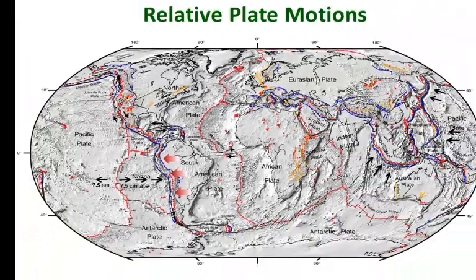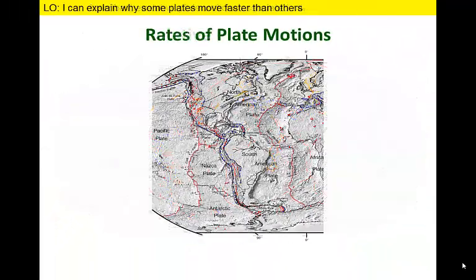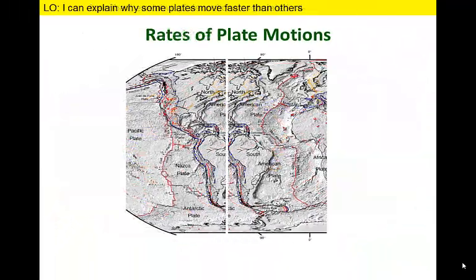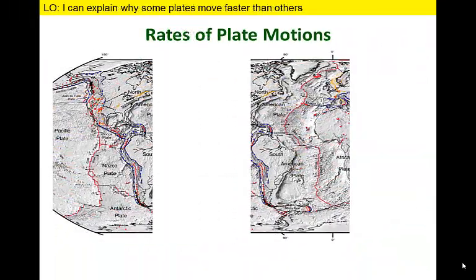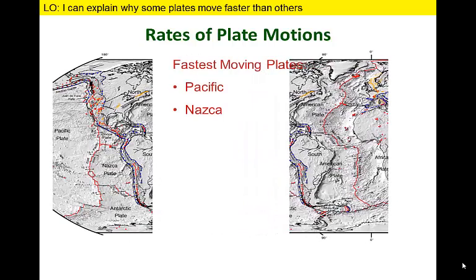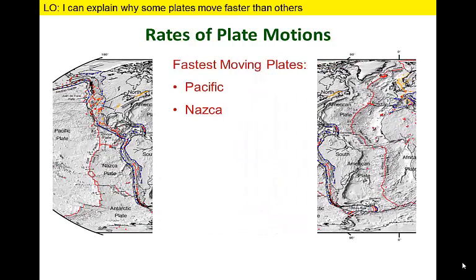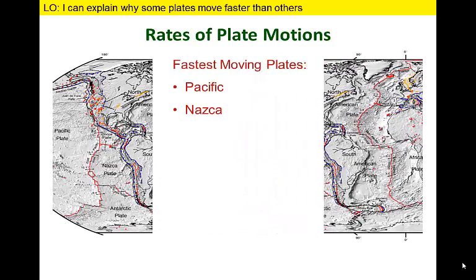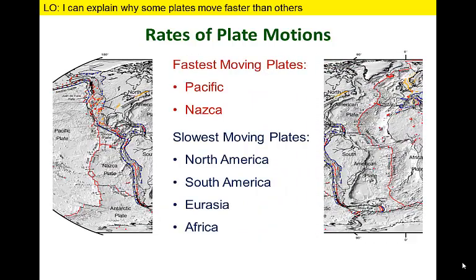The NASCA and Pacific plates move faster than other plates, while the plates around the Atlantic Ocean move relatively slowly. This helps explain why the Pacific Ocean basin is wider than the Atlantic. But what's the explanation for this contrast in rates?